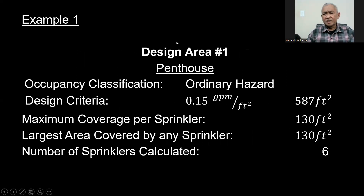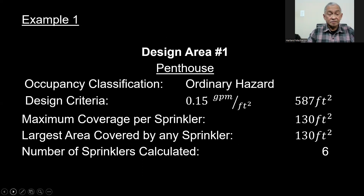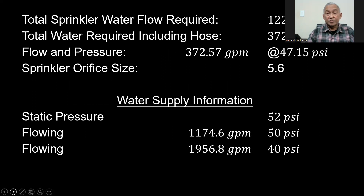Based on our previous calculations on fire sprinkler demand, we get this data here. We have a design area, which we call design area number one, which is a penthouse. It is classified as ordinary hazard with a design criteria of 0.15 gallons per minute per square foot and 587 square feet. Maximum coverage per sprinkler is 130 square feet, and the largest area covered by any sprinkler based on our layout was 130 square feet. The number of sprinklers calculated is six.